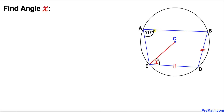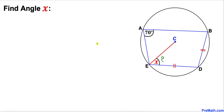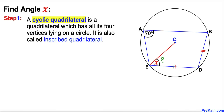In this video we have a cyclic quadrilateral ABDE inside a circle whose center is C, such that angle A is 70 degrees and sides ED and BD are equal in length. We are going to calculate angle x.